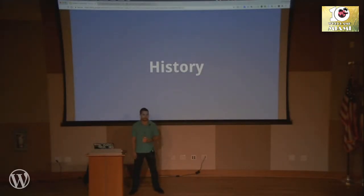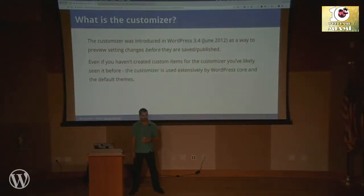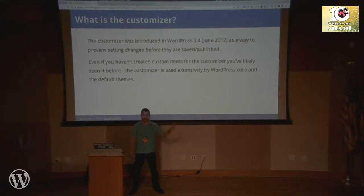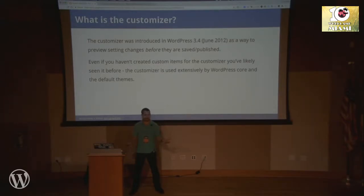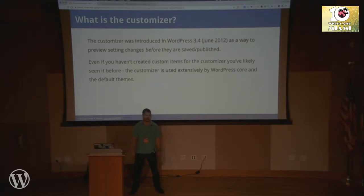Before we dive into the JavaScript API, I want to take a look at what the Customizer is. For those not familiar, it's a live preview interface in WordPress, introduced all the way back in 2012. Before that we had the Settings API — if you've ever installed a plugin or theme and there's a screen with tabs and options in the WordPress admin, that's the Settings API. The problem is users save settings and they're immediately published live, so if you change a color scheme from light to dark you have no idea what it'll look like until you save and check the front end.